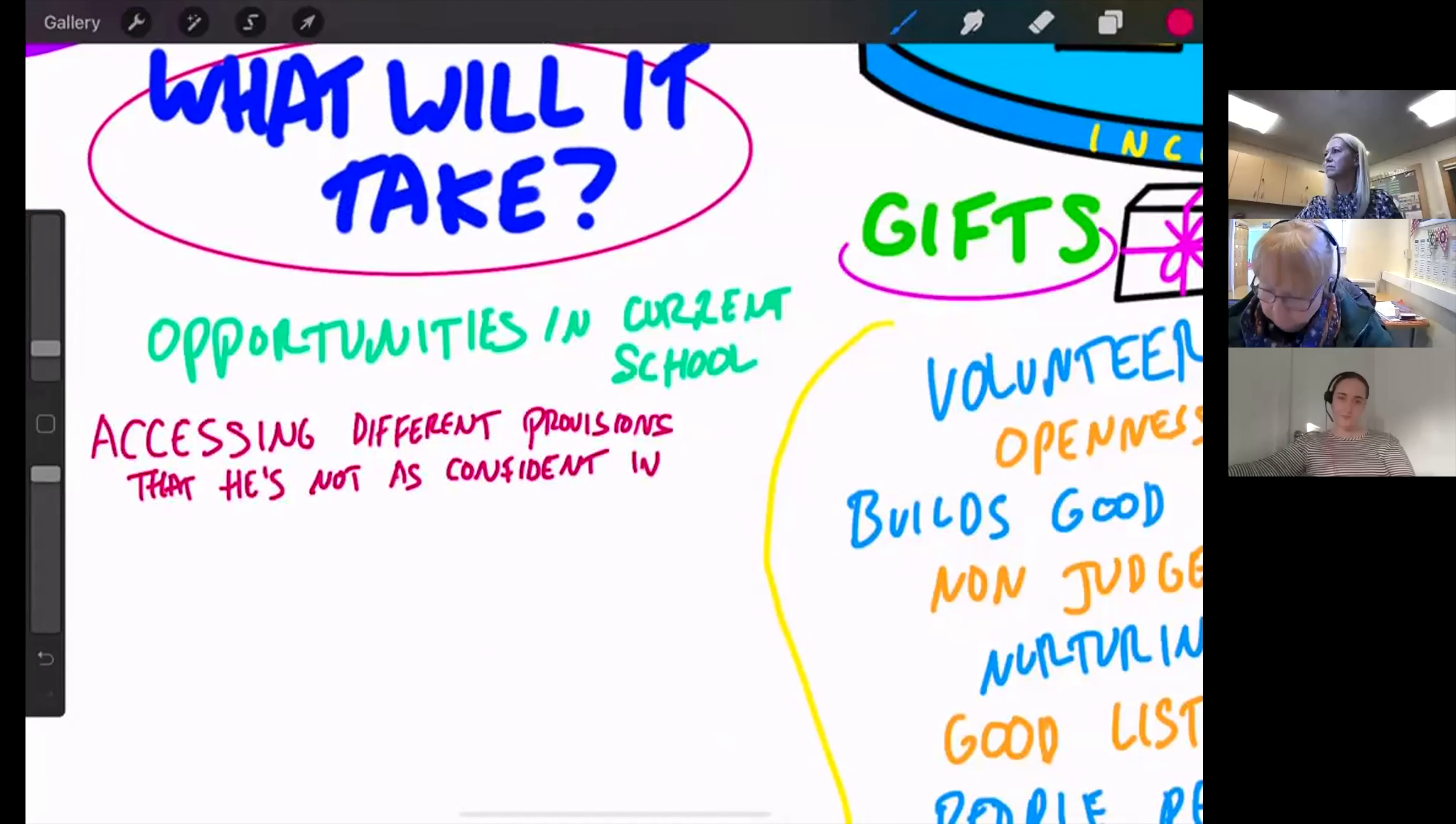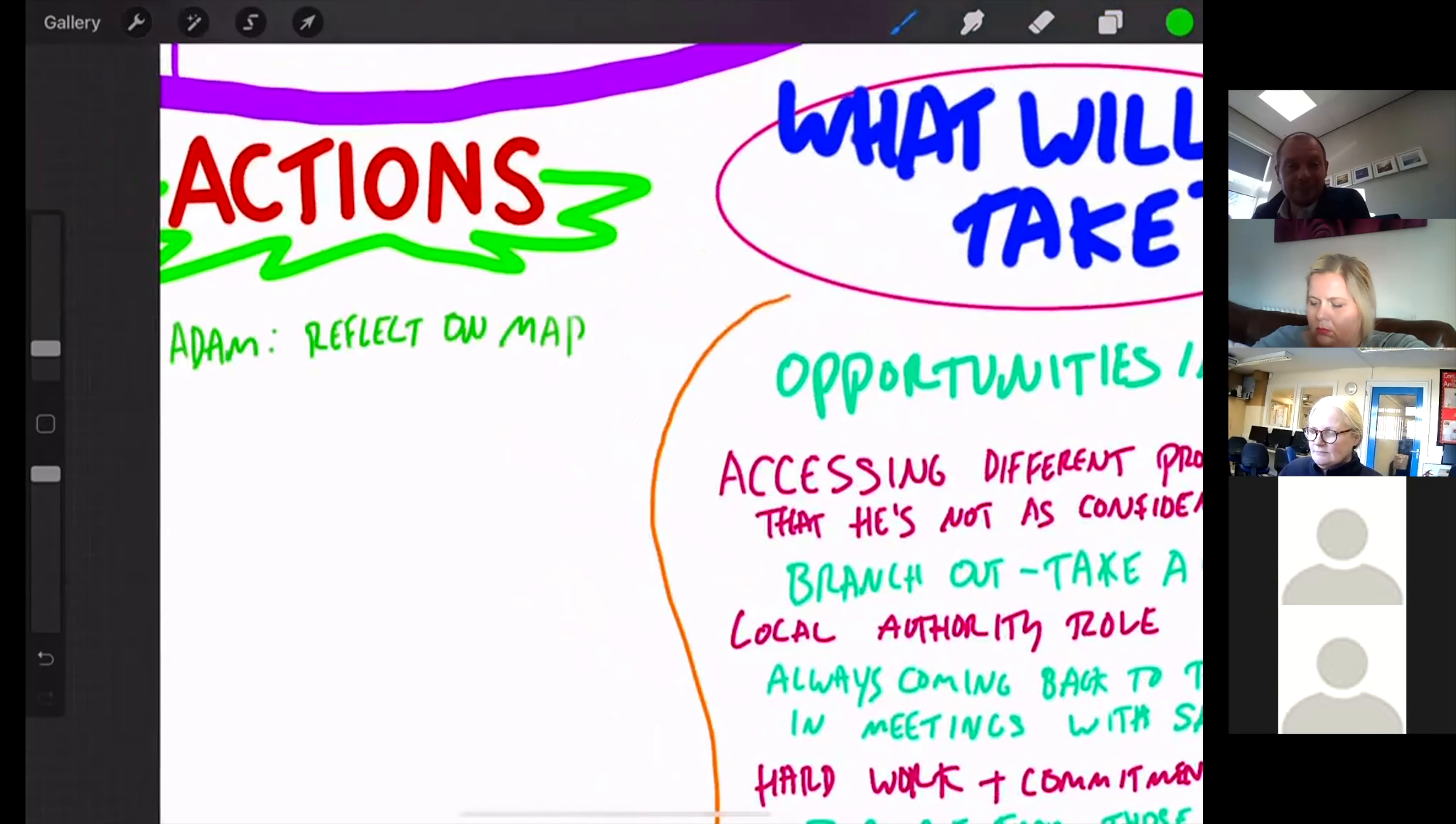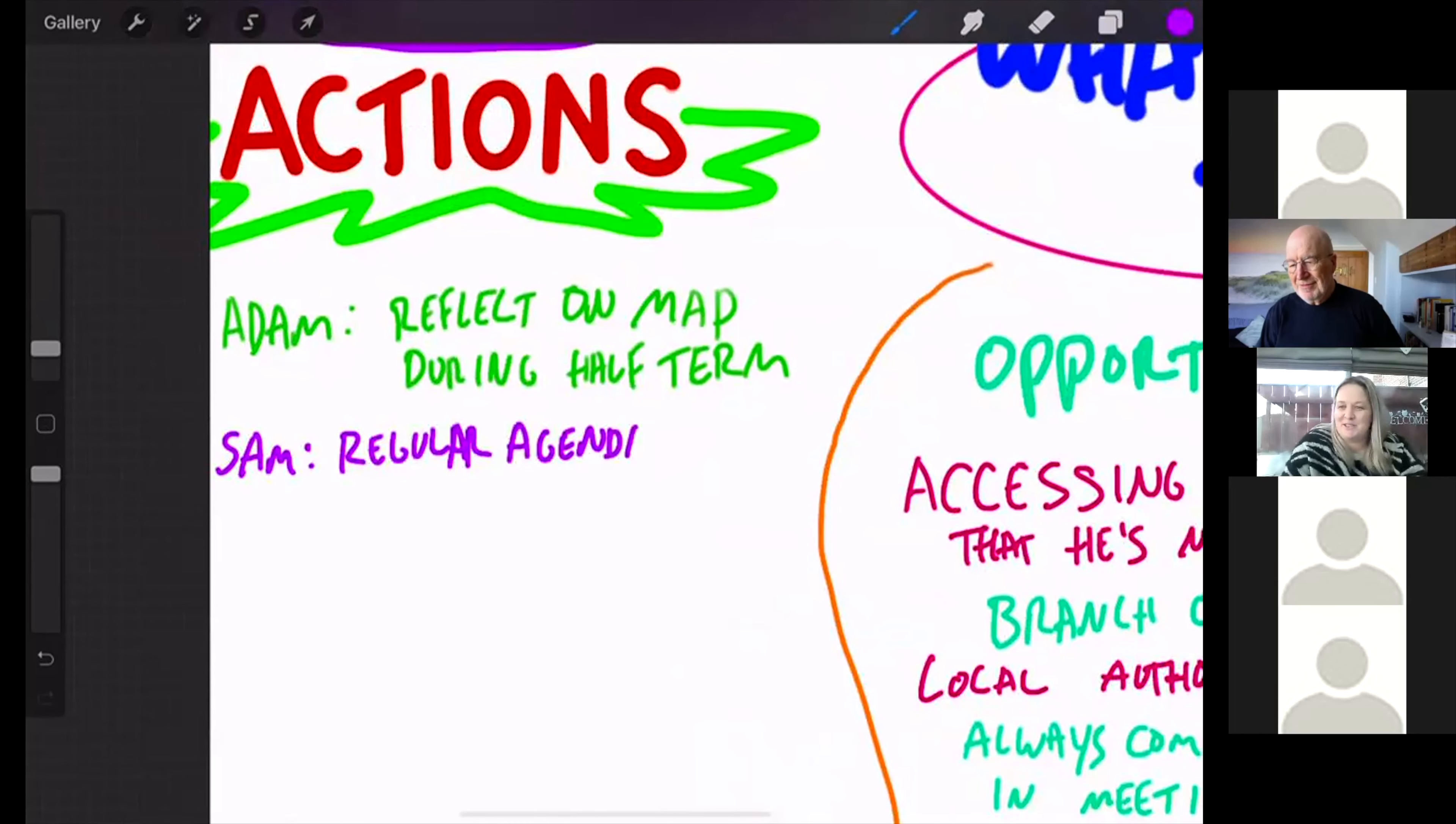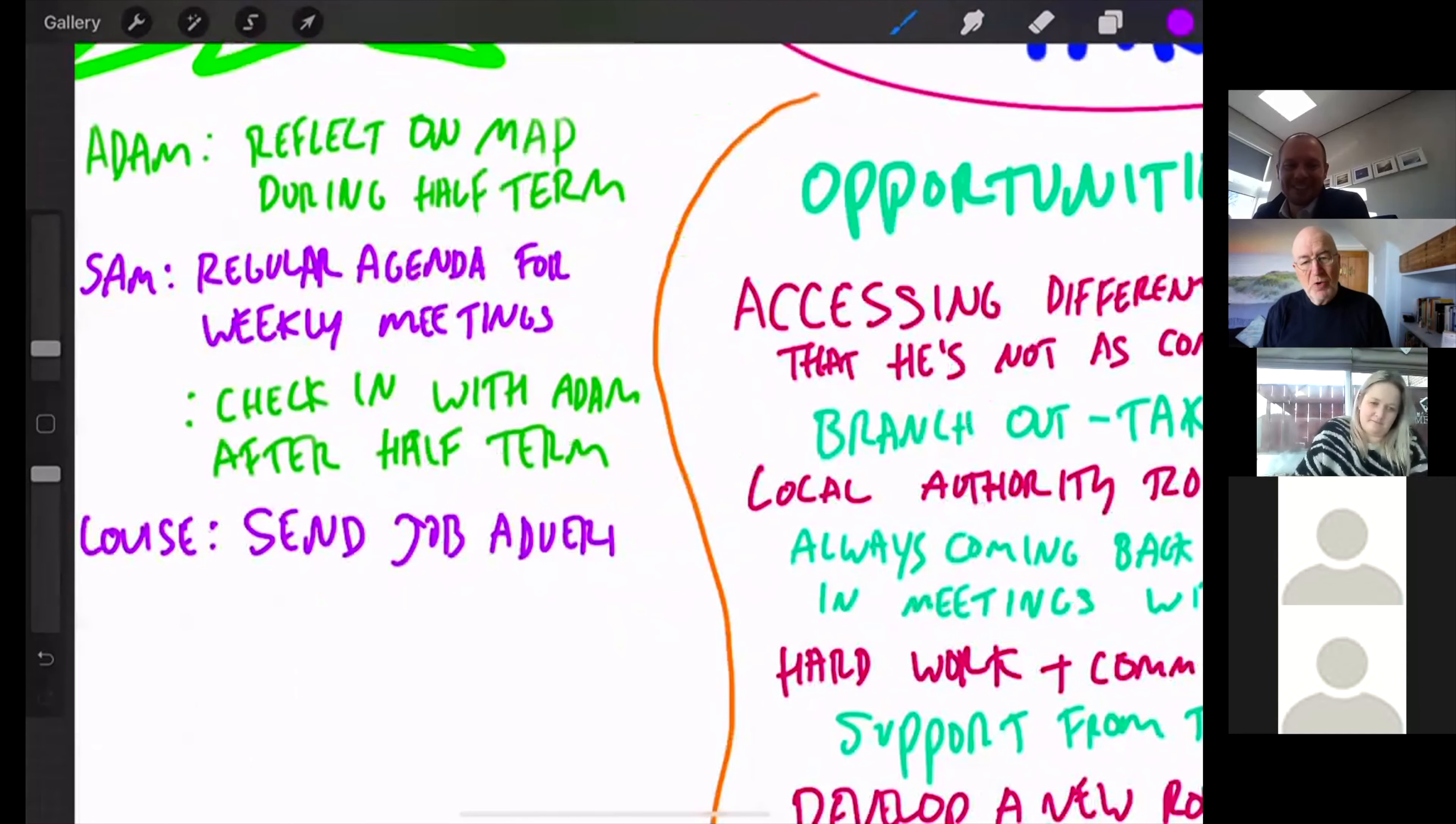Then we're going to have a look at what will it take - strategies for how we can get towards our dream future - and then actions. Who's going to do what today, tomorrow, this week, by when? Basically solid accountable actions to take away from the meeting.